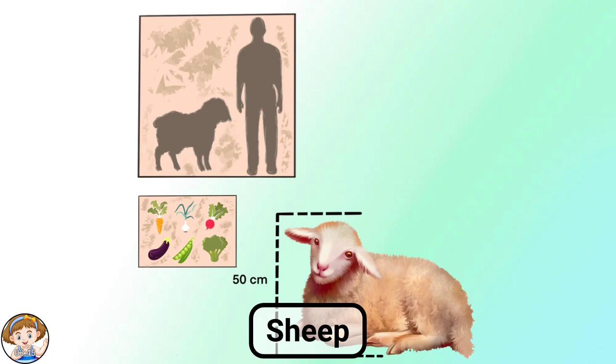Sheep live in large groups. Such a group is called a herd. If a lamb lives separately and does not communicate with her friends, she will begin to feel very sad. Very much so.